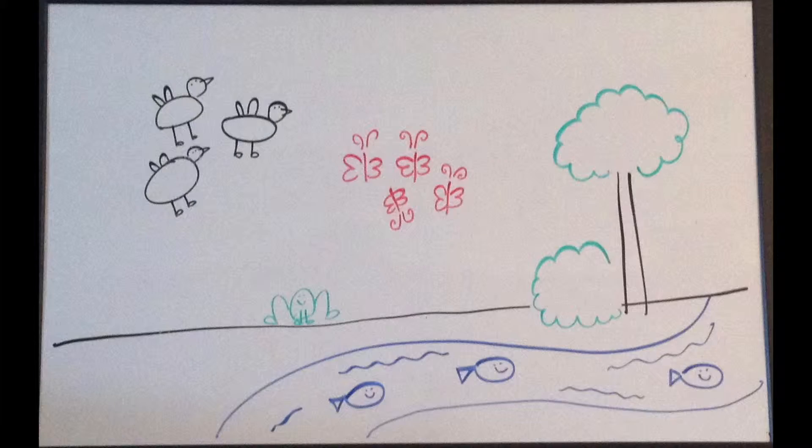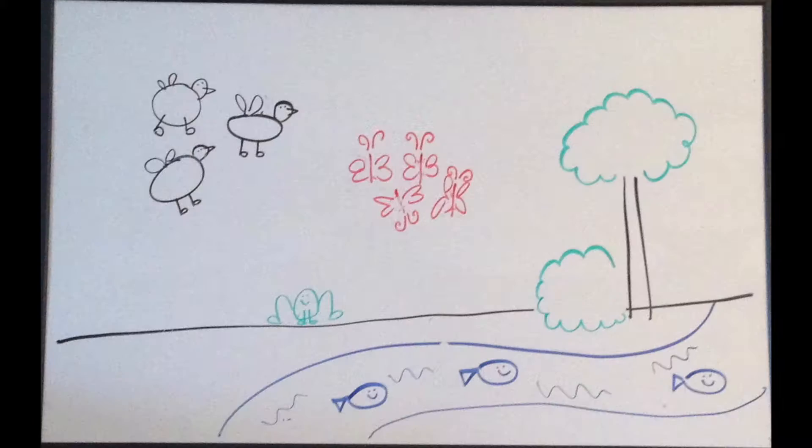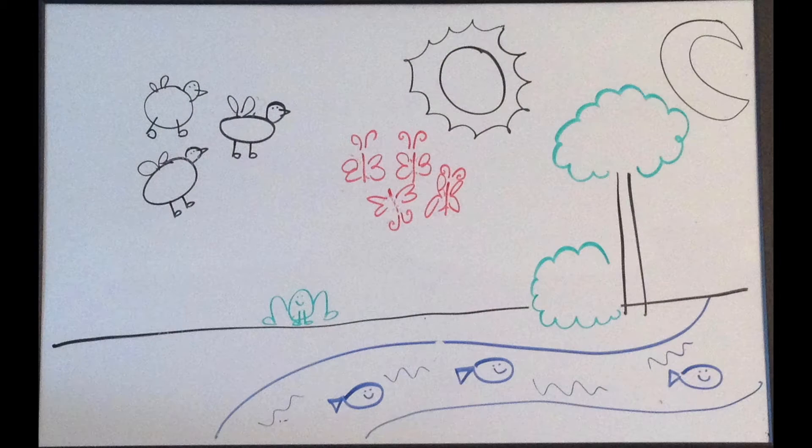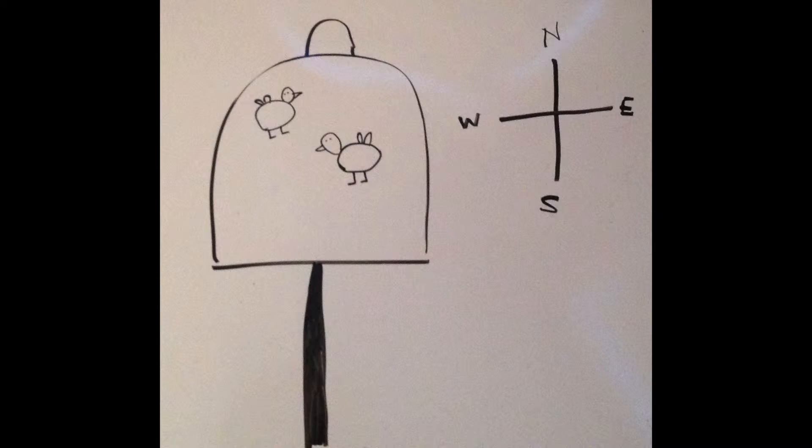Animals migrate for a number of different reasons, for example to find food, breeding grounds, to escape harsh winters, and much more. For years it was a mystery as to how they did this. Originally scientists thought that animals took cues from the environment to migrate, such as the sun, the moon, the stars, etc.